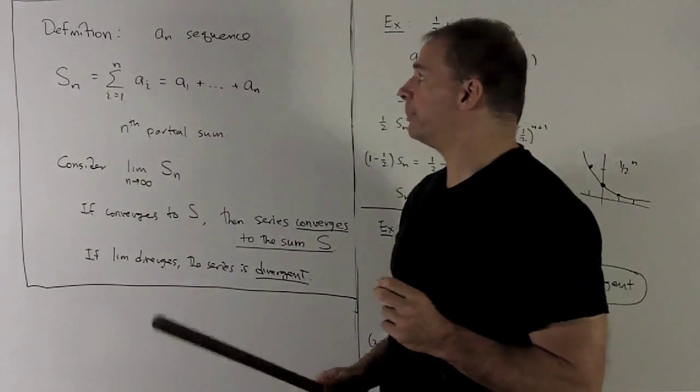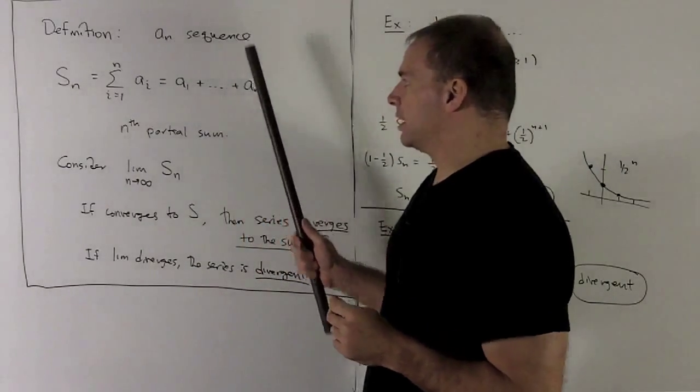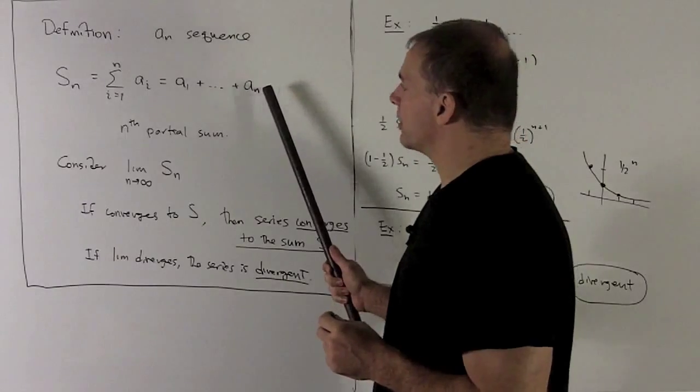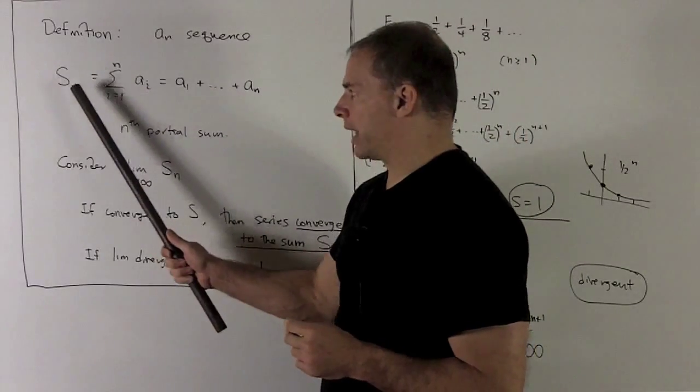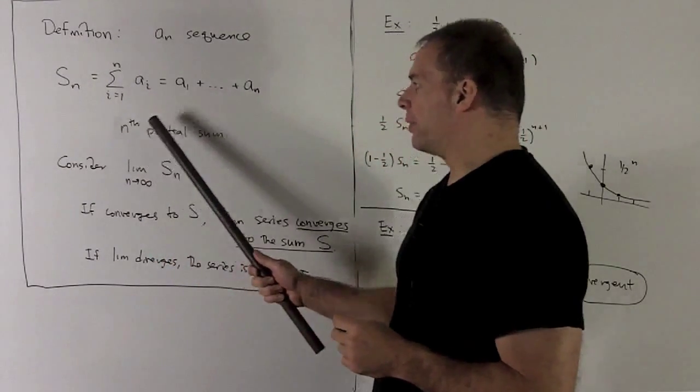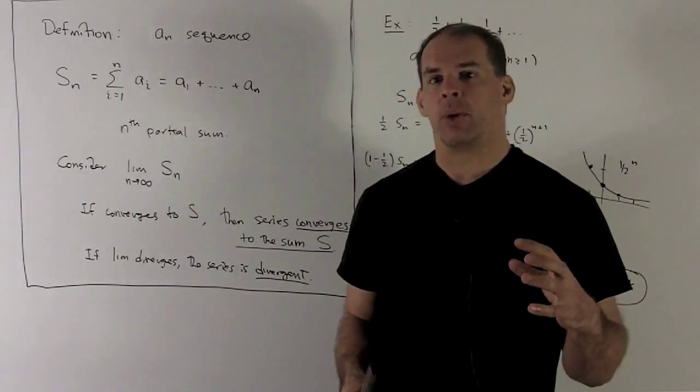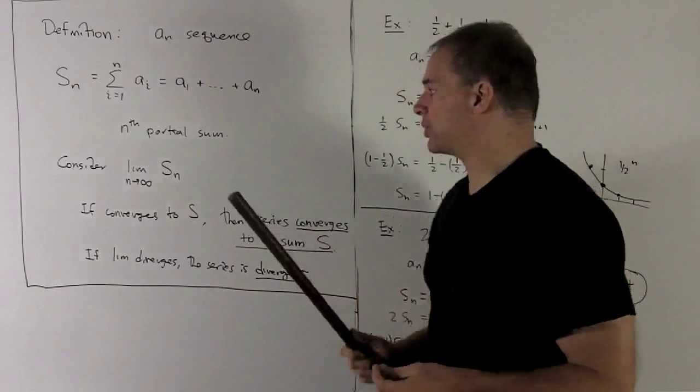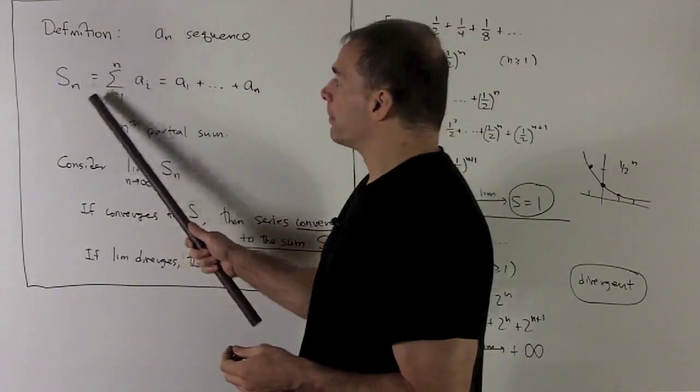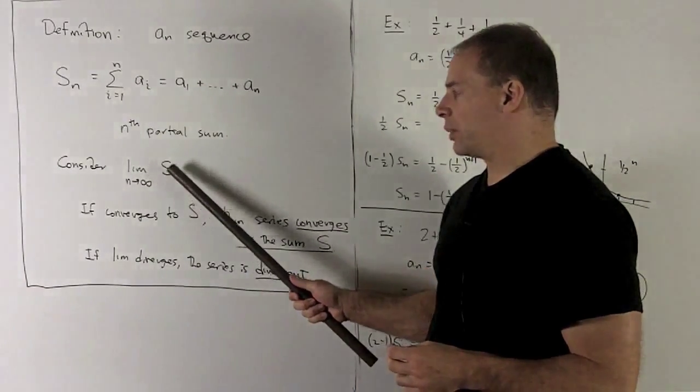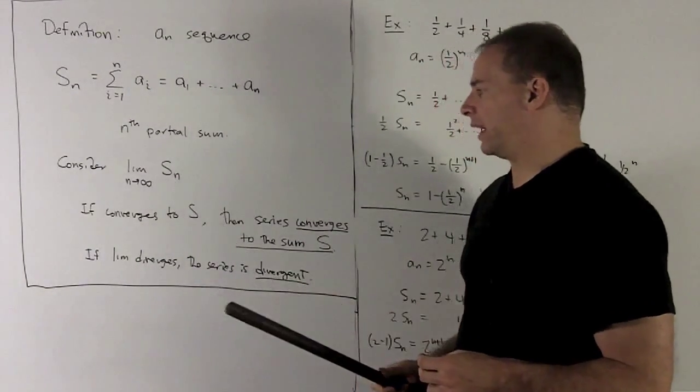So, the way we fix things is by carefully defining the process. So, we need a definition. Let a sub n be a sequence. We're going to call the sum of the first n terms, S, capital S, sub n. It's going to be the nth partial sum. So, the idea is not to try to add up everything at once. We're just going to add the first n terms. That's going to give me a new sequence that I call S sub n. Then, we're going to take the limit of this sequence, S sub n, as n goes out to infinity.